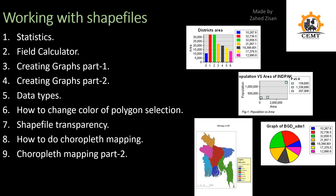The next section is on working with shapefiles. We'll learn about statistics, field calculator, creating graphs, different data types in shapefile attribute table fields, and how to change the color of selections. When you select a feature in ArcGIS it's highlighted with a border color — we'll learn how to change that to a fill color or a fill-border combination. We'll also cover shapefile transparency, which lets you see through one shapefile to another below it.